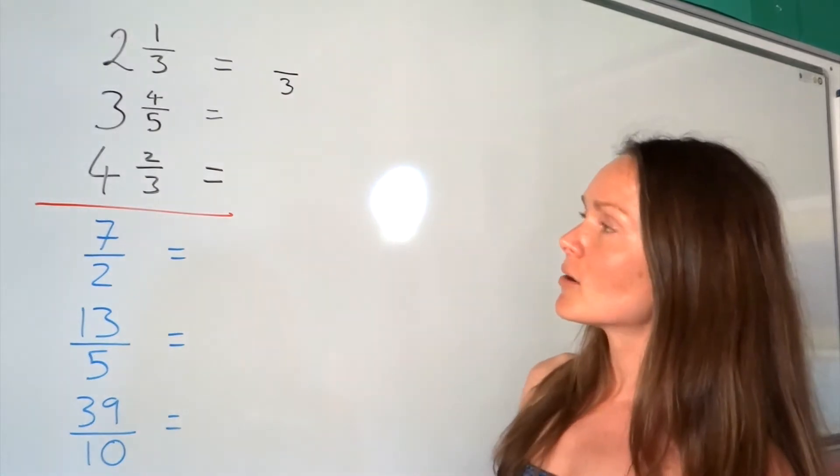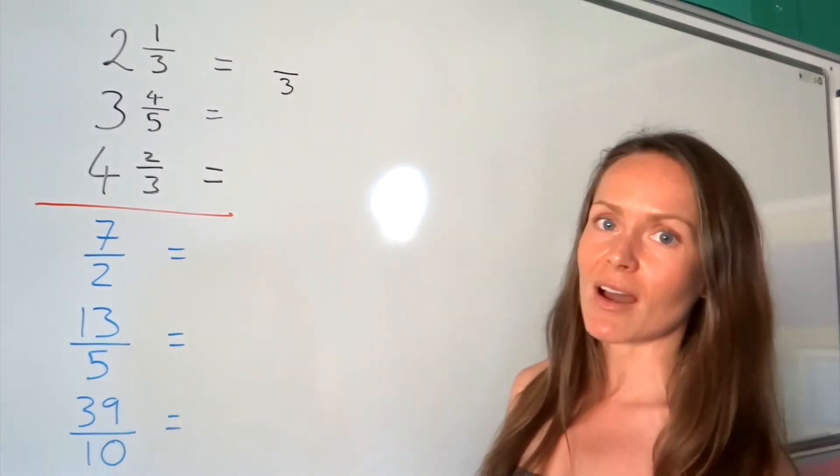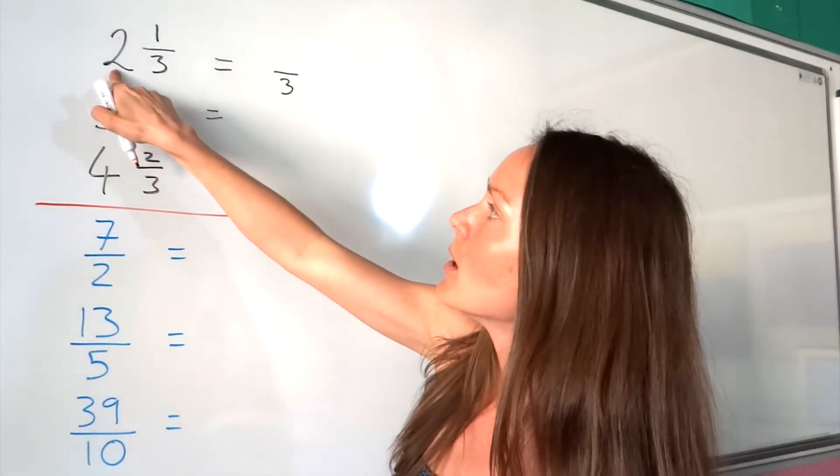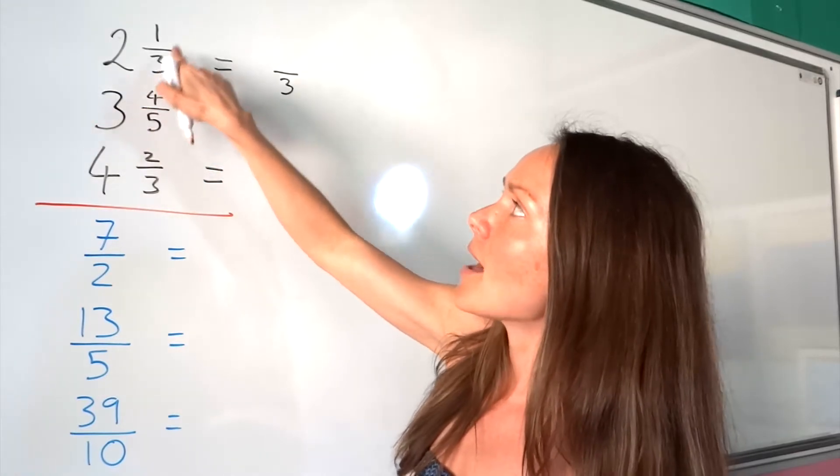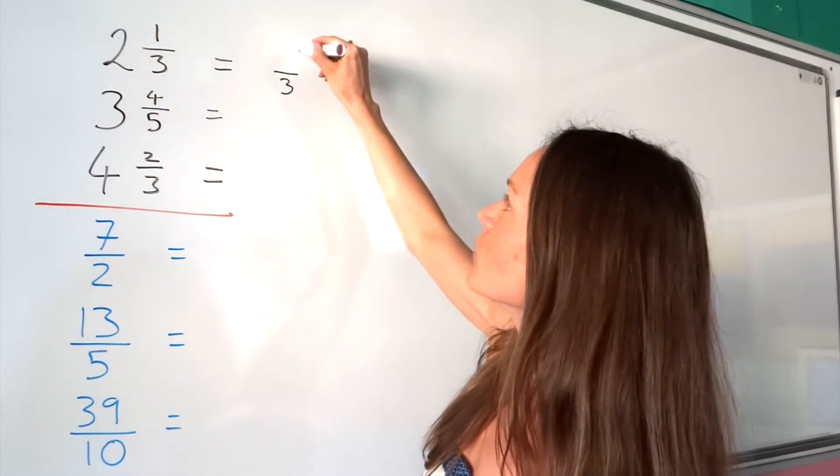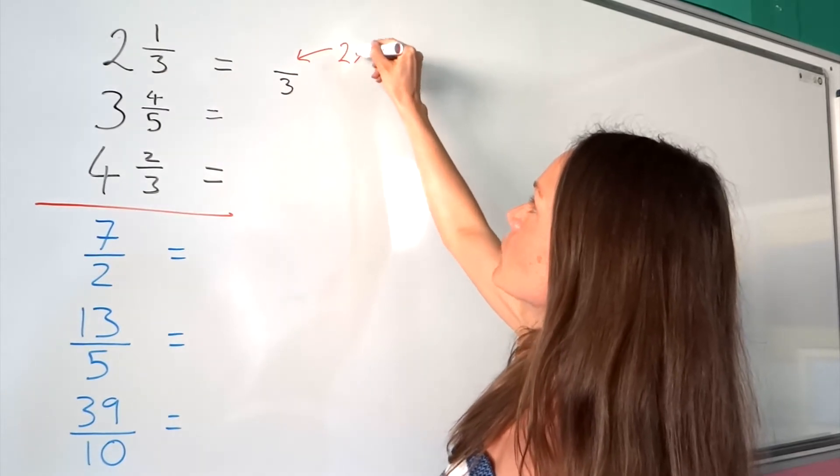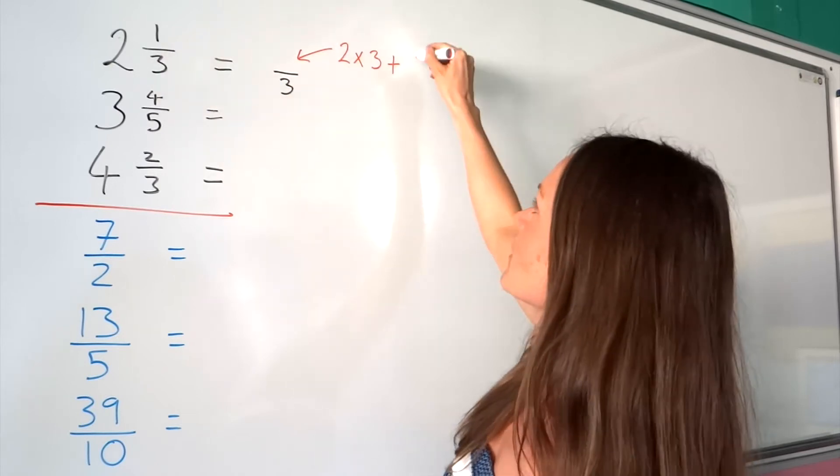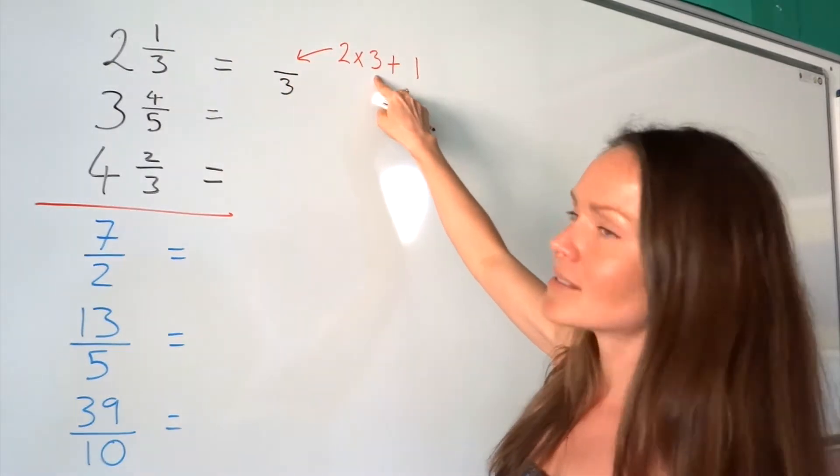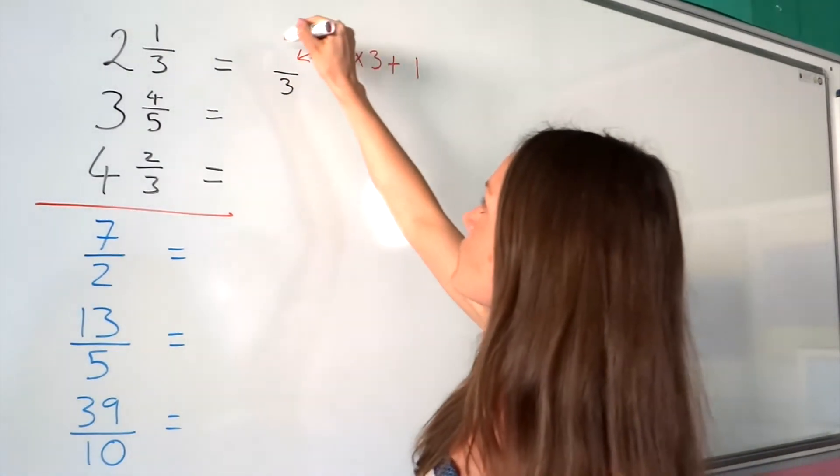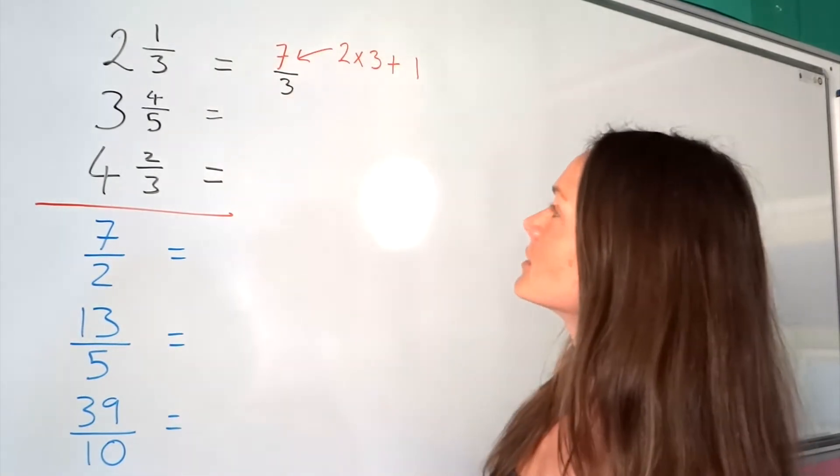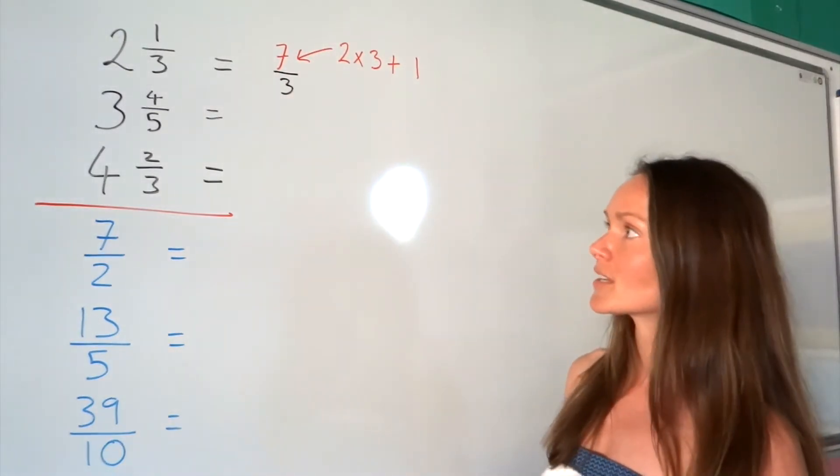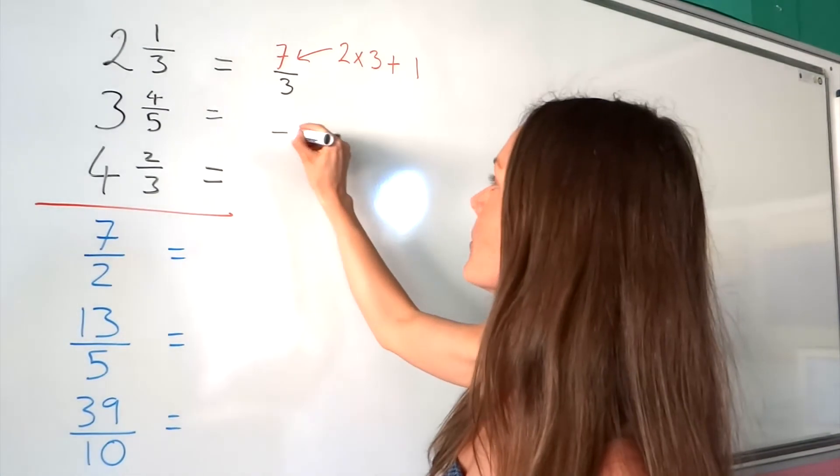To find the numerator, you multiply the whole number by the denominator and then add the numerator. So you're doing: whole number times denominator plus numerator. For example, 2 times 3 is 6, plus 1 gives me 7. So 2 1/3 equals 7/3.